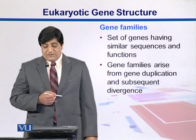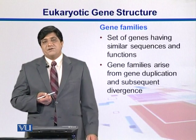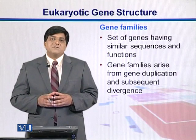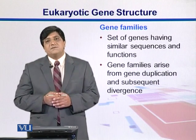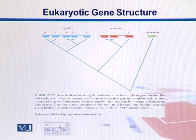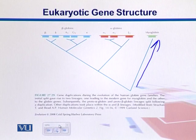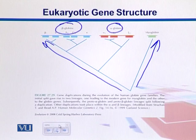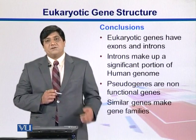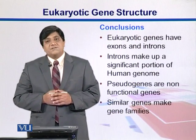Sometimes genes have similar sequences and similar functions. Groups of genes performing similar functions, found within an organism or between different organisms, can be categorized as gene families. Gene families arise from gene duplication events. For example, in the human globin gene, the first duplication gives rise to myoglobins and globins; within globins we also see alpha and beta globins. In conclusion, eukaryotic genes have exons and introns, and introns make up a significant proportion of higher organisms' genomes. Pseudogenes are non-functional genes, and genes similar in function make up gene families.